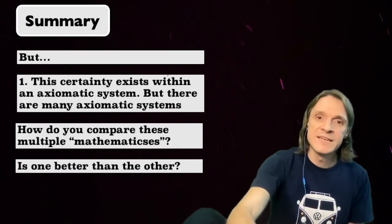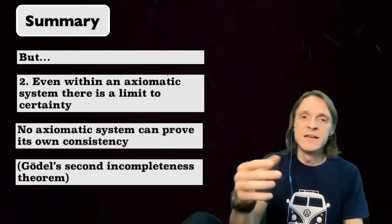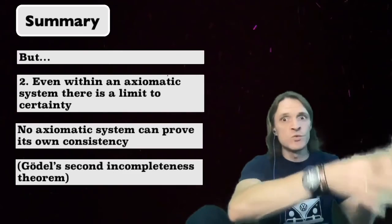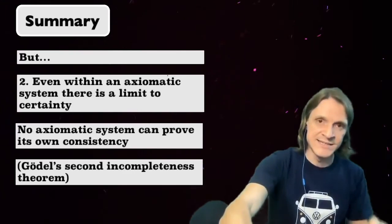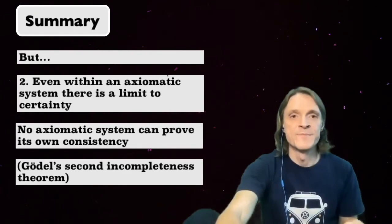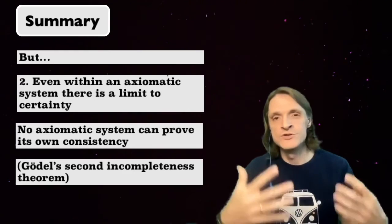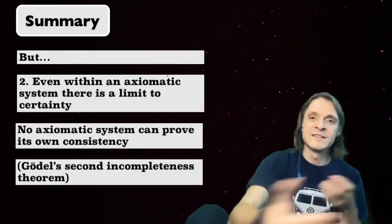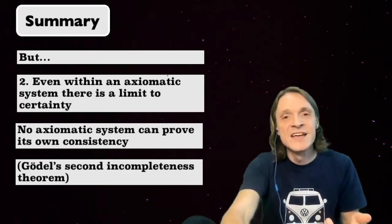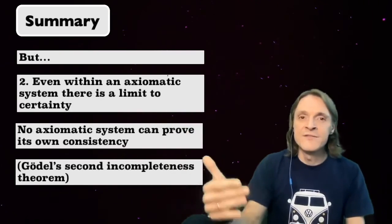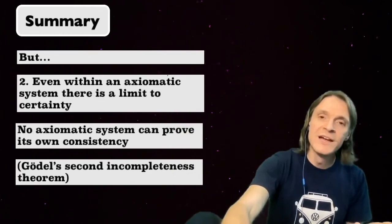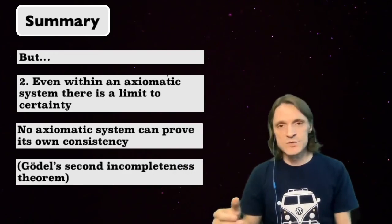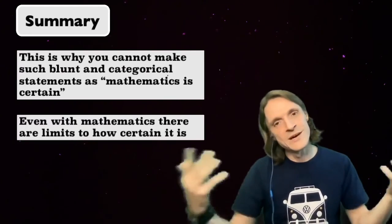Second, and this is a little more difficult to understand. Even if we imagine that we have selected one axiomatic system, one mathematics, and we know that it is the best one, absolute certainty still doesn't exist, even within this axiomatic system. This is because no axiomatic system, according to Gödel's second incompleteness theorem, can prove its own consistency. If mathematics cannot prove its consistency, it means that there exists a chance that somewhere down the line, it will create a contradiction. And if that happens, this will be truly catastrophic. Because after all these years, we will realize that we cannot trust mathematics.